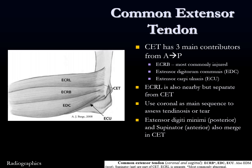The common extensor tendon is on the other side at the lateral epicondyle. It has three main contributors from anterior to posterior: ECRB, EDC, and ECU. The first or most commonly injured part is the extensor carpi radialis brevis (ECRB). The extensor carpi radialis longus (ECRL) is nearby but has a more proximal insertion on the distal humerus and is not a distinct part of the common extensor tendon origin. The coronal is the main workhorse sequence to evaluate this.